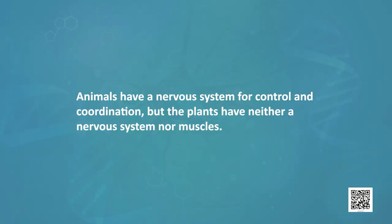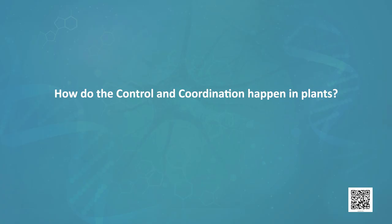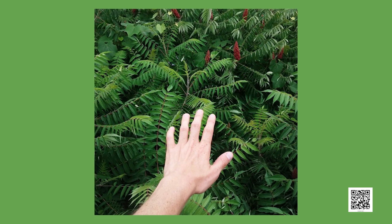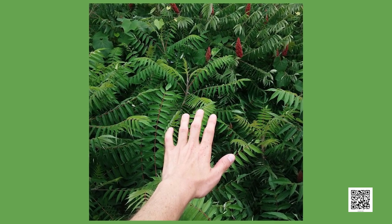Today we will start with the interesting topic of control and coordination in plants. As we discussed in the last session, animals have a nervous system for control and coordination, but plants have neither a nervous system nor muscles. The question is how does control and coordination happen in plants? Do they also respond to stimuli? Remember the example of the touch-me-not plant, also called choi-muy — it curls its leaves when we touch it.